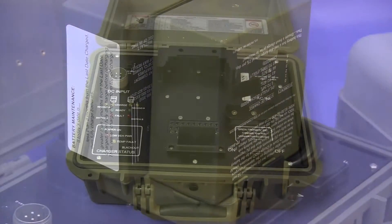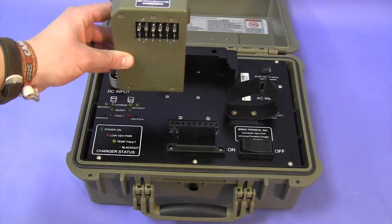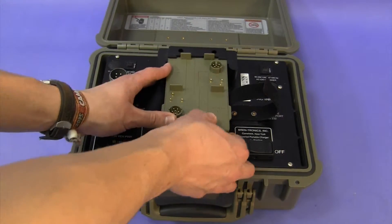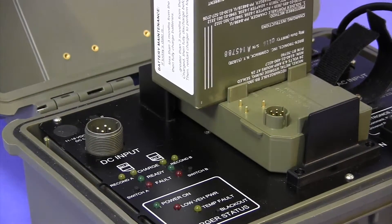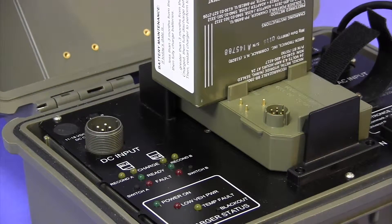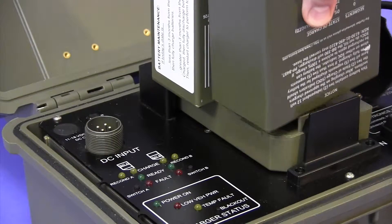To charge the batteries, first install the adapter plate onto the charger. Then, place the batteries onto the adapter plate and turn on the charger.